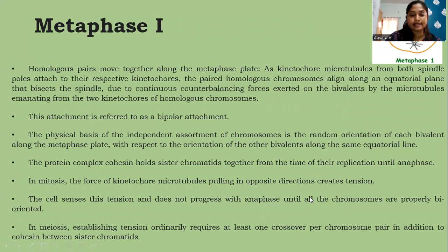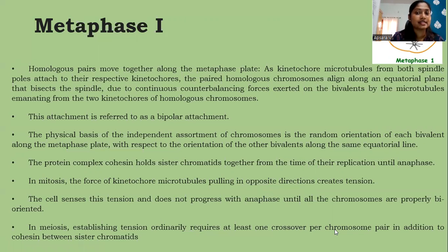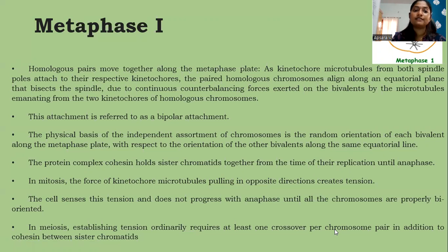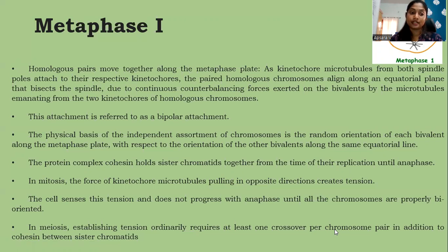In metaphase one, homologous pairs move together along the metaphase plate as kinetochore microtubules from both spindle poles attach to their respective kinetochores. The paired homologous chromosomes align along an equatorial plane that bisects the spindle, due to continuous counterbalancing forces exerted on the bivalents by microtubules. This attachment is referred to as bipolar attachment. The physical basis of independent assortment is the random orientation of each bivalent along the metaphase plate relative to other bivalents. The protein complex cohesin holds sister chromatids together from the time of replication until anaphase; the cell senses tension from opposing kinetochore microtubules and does not progress to anaphase until all chromosomes are properly oriented.